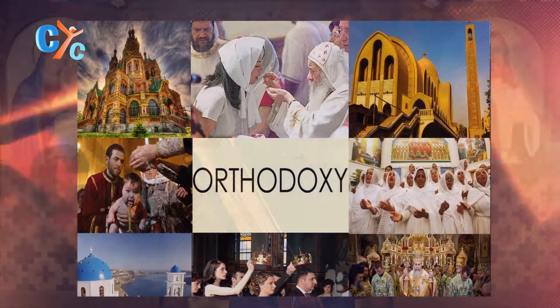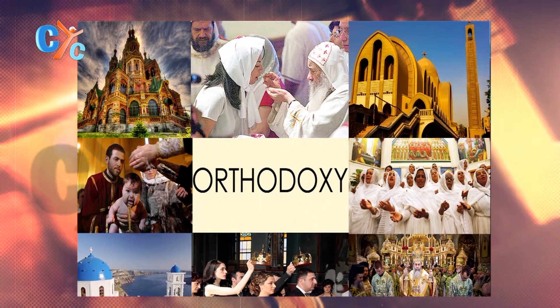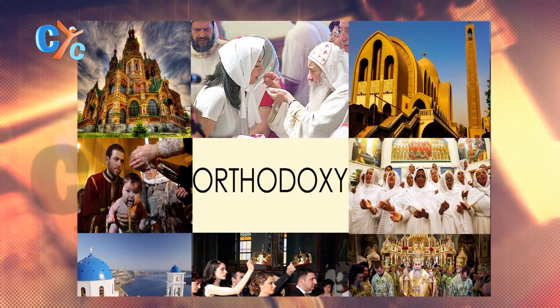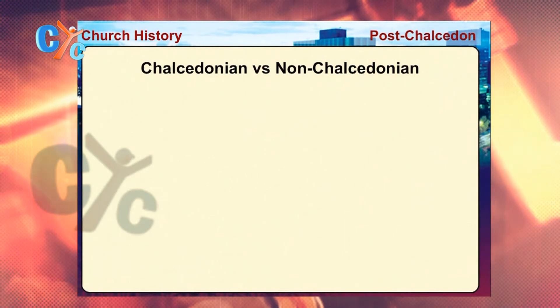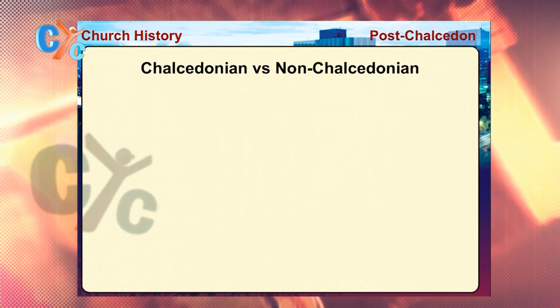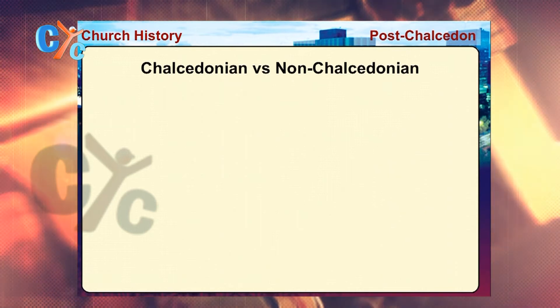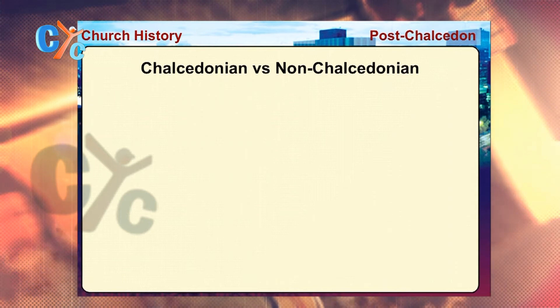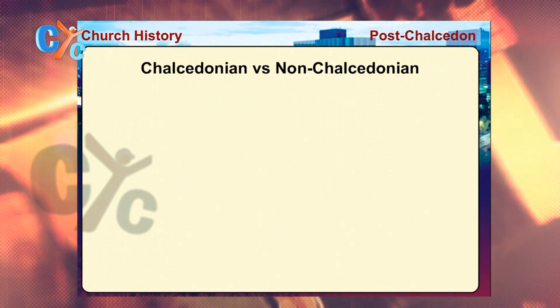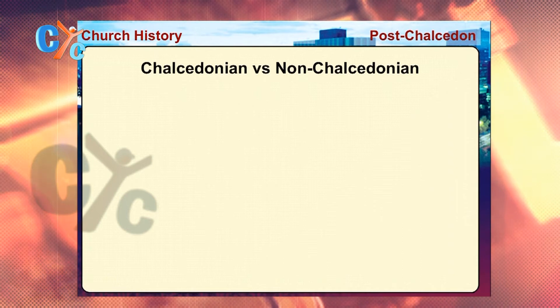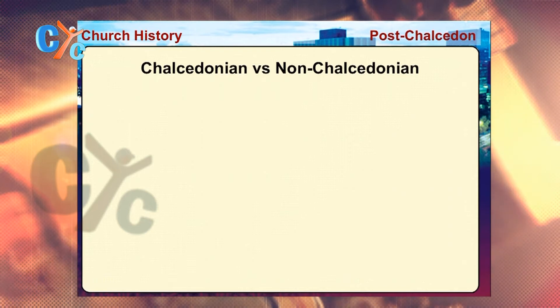As we remember and discussed in the previous episode, the Council of Chalcedon split the Christian world into two big teams. One team which accepted the faith of the Council of Chalcedon is called the Chalcedonians, which are in today's world the Catholics and the Eastern Orthodoxy. The other team, the non-Chalcedonians, are in today's world the Oriental Orthodox Church, including our Coptic Orthodox Church.